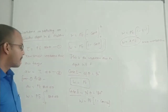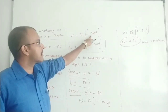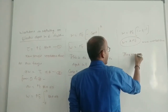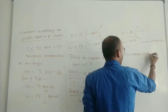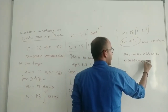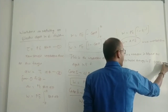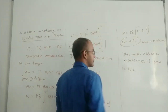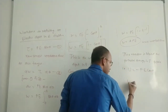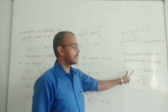For the potential energy of an electric dipole, this work done W equals PE times 1 minus cos theta is stored as potential energy in the electric dipole. Therefore, potential energy U equals minus PE cos theta. In vector form, this can be written as U equals minus p dot E, which is the vector form of the potential energy of an electric dipole in an electric field.